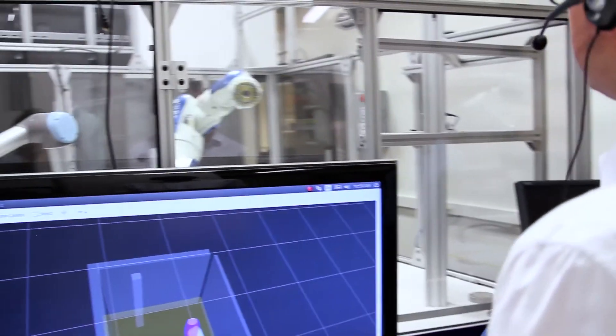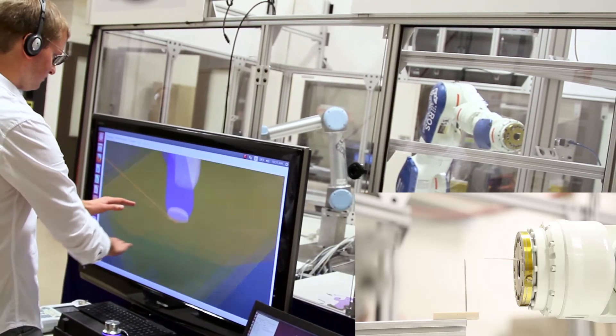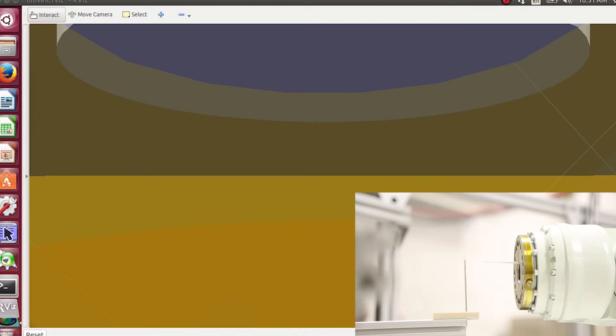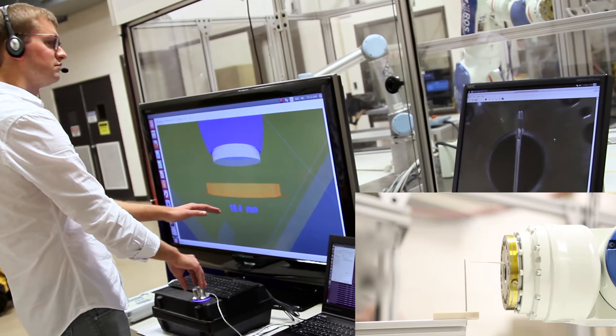Inappropriate controls can lead to long execution times and unnecessary stress on the human operator. At the Nuclear and Applied Robotics Group of UT Austin, we are working to create a truly intuitive control interface for telerobotic systems.